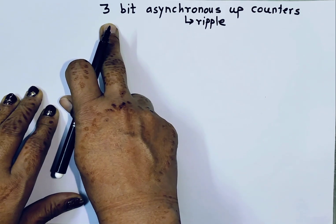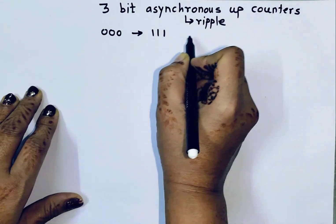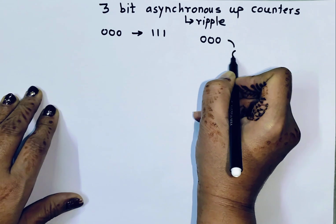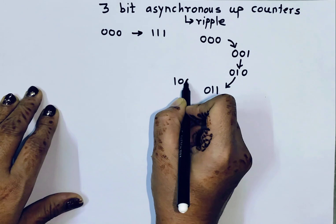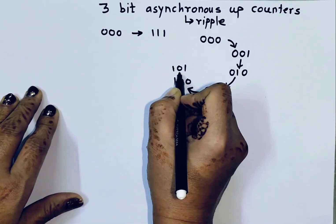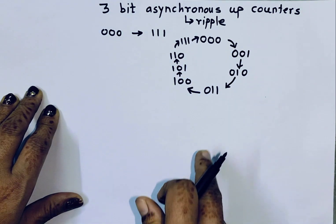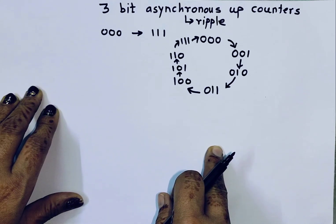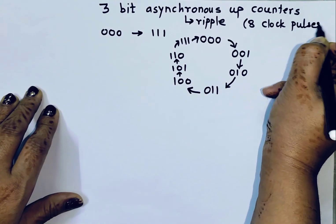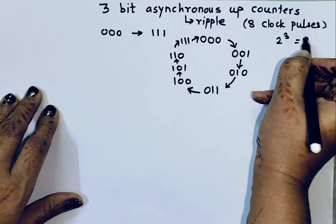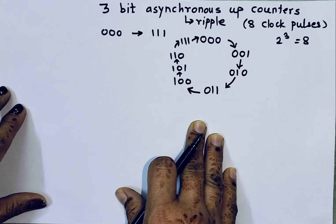For a 3-bit counter, it counts from 0 0 0 to a maximum of 1 1 1 — that is, 0 0 0, 0 0 1, 0 1 0, 0 1 1, 1 0 0, 1 0 1, 1 1 0, 1 1 1 — and then comes back to 0 0 0. So the total number of clock pulses counted is 8, that is 2 raised to 3. Since it is a digital circuit, it always starts with 0. For a 3-bit asynchronous counter, we need 3 flip-flops.